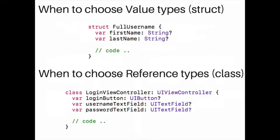When choosing a reference type, use it for modeling complex data. For instance, use a class when you need inheritance — for example, when you need functionality provided by a framework. Also, if the properties of the entity are reference types, such as UIButton or UITextField which are classes, then that entity is a good candidate to be a class.